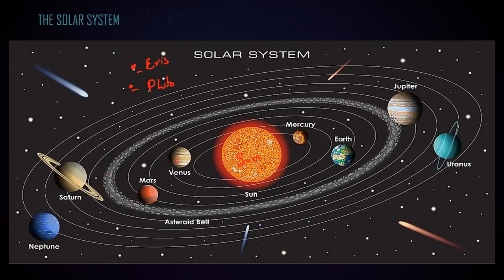Some stellar objects revolve or move around these planets — what we call them is Moon. Any stellar object which orbits a planet, moving around it, we call that object a Moon. Different planets have different satellites, and the term Moon is used for them.